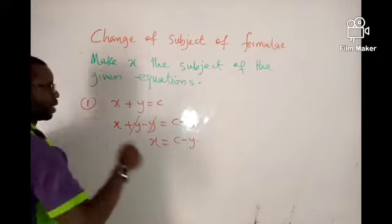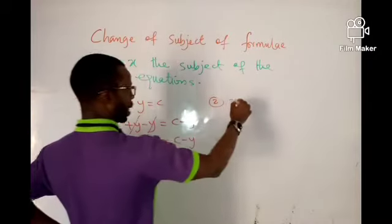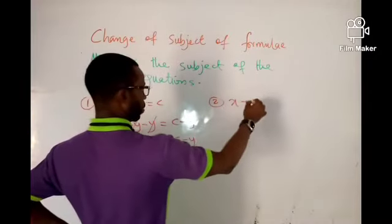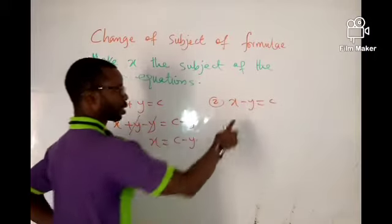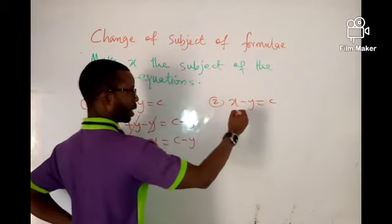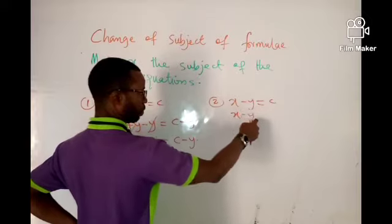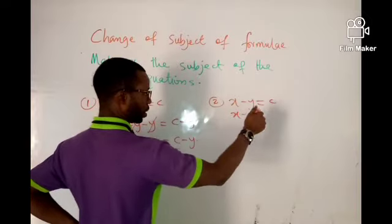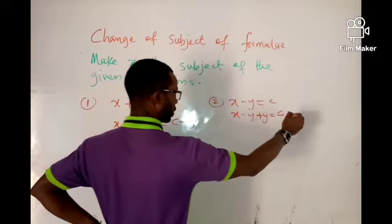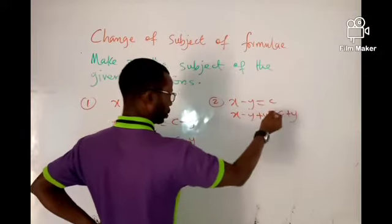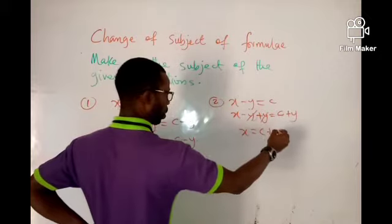Similarly, number two: if I give you x minus y equals c, you will see that something is subtracted from the x I'm looking for. So the reverse, or the opposite, is plus y. I'll do that to both sides — this will cancel this — so x is equal to c plus y.